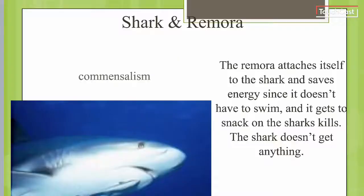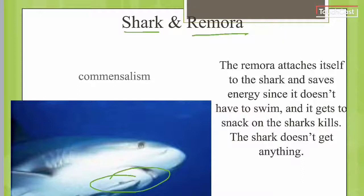The third example is the shark and the remora. The remora attaches itself to the shark and saves energy since it doesn't have to swim. The remora gets to attach itself, uses no energy, and snacks on anything the shark kills. The shark doesn't get anything from this relationship — it just keeps doing what it's doing. The remora is the positive, the shark is the neutral.